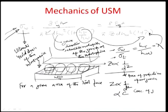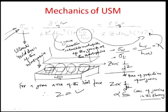Z is also proportional to the concentration of the grains in the slurry. If c is the concentration of grains in the slurry, more concentration means more grains between the tool and workpiece. Therefore, Z equals some constant psi times c divided by d squared, and we can substitute this value of Z into the main equation.